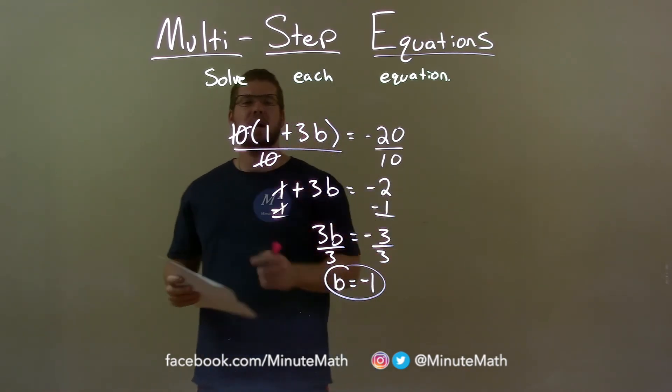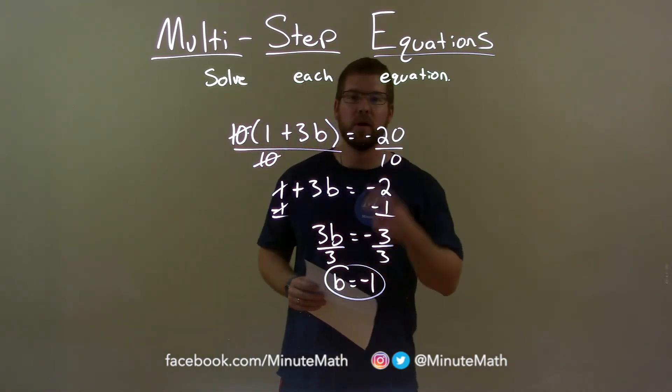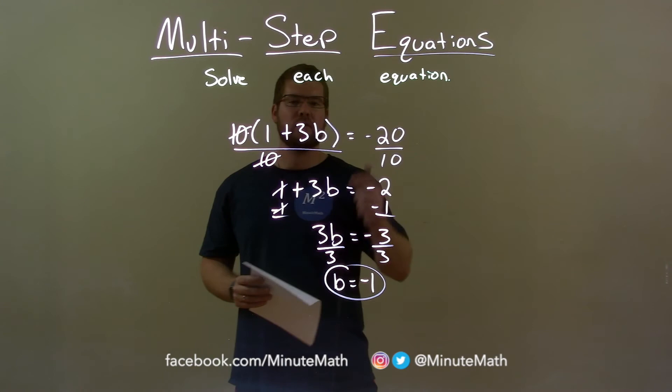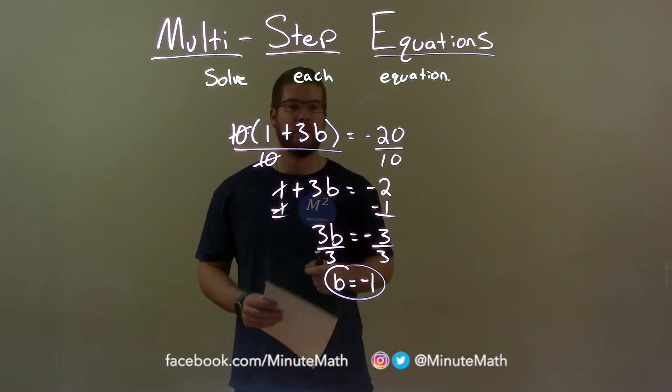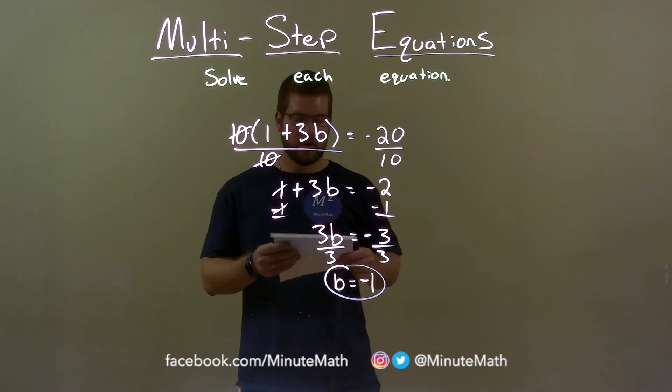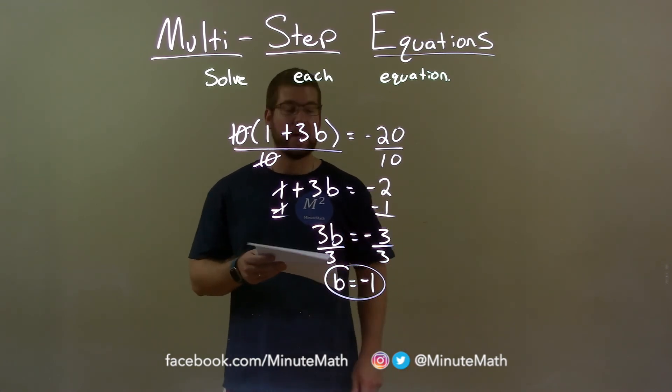Quick recap, we're given 10 times 1 plus 3b equals negative 20 and we'll solve this for b. Divide both sides by 10, then I subtracted one to both sides, then I divide both sides by 3 and that got me my final answer of b equals negative 1.